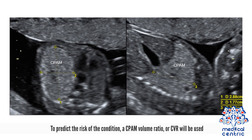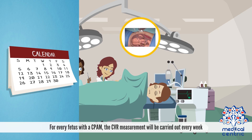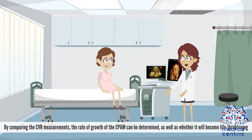To predict the risk of the condition, a CPAM volume ratio, or CVR, will be used. This is measured by using the formula: length times width times anteroposterior diameter, divided by two, divided by the head circumference. For every fetus with a CPAM, the CVR measurement will be carried out every week. By comparing the CVR measurements, the rate of growth of the CPAM can be determined, as well as whether it will become life-threatening.